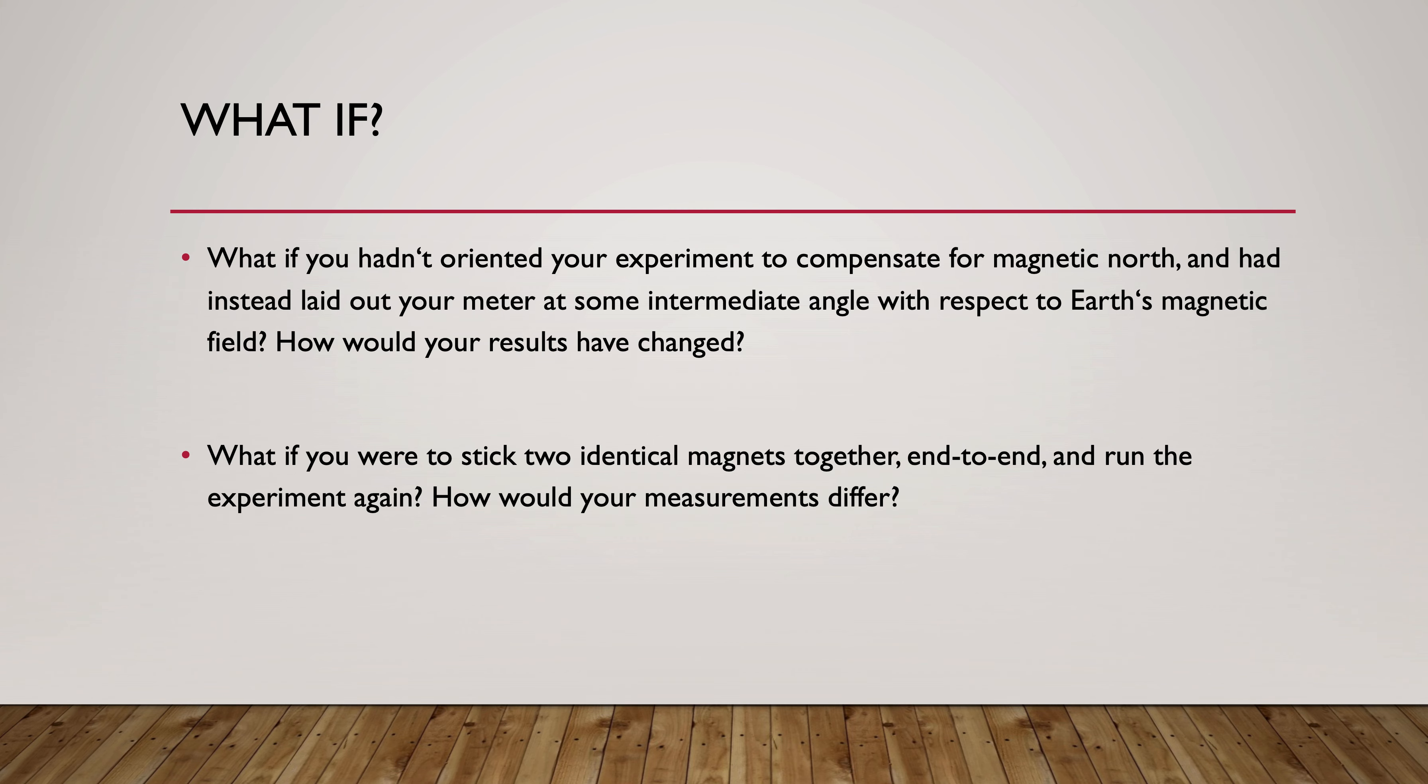What if we hadn't oriented our experiment to compensate for magnetic north? If we did that, then the Earth would have a larger effect on our lab because we wouldn't know how to subtract that from our measured value.